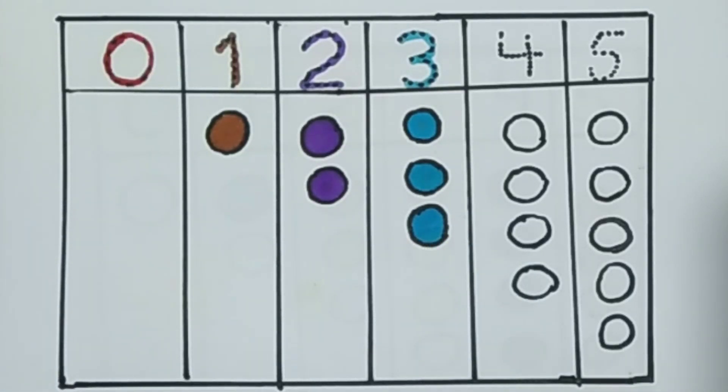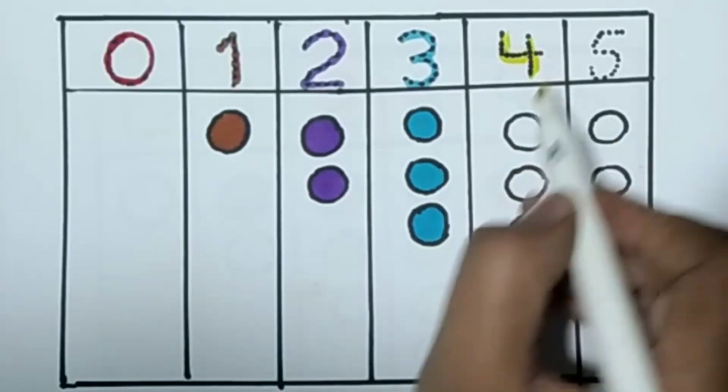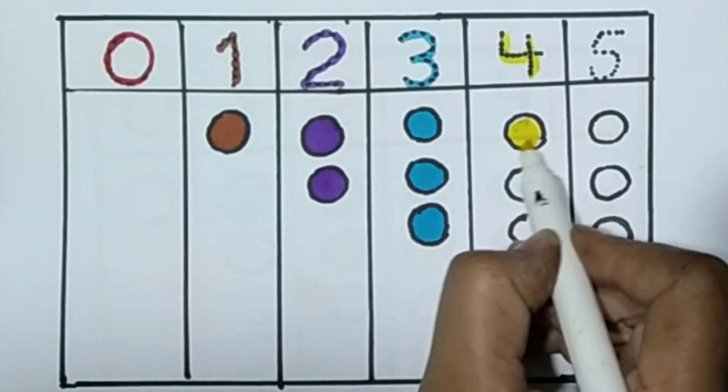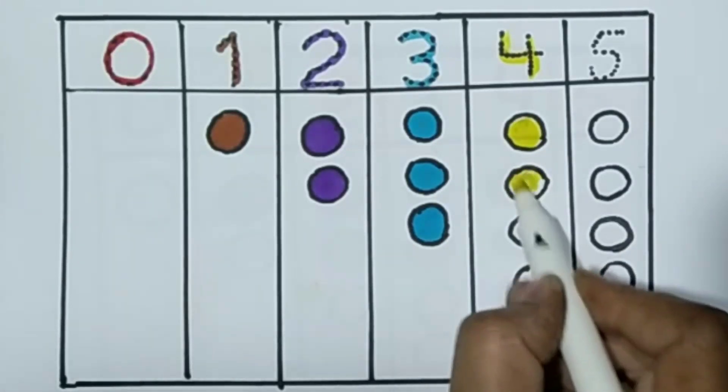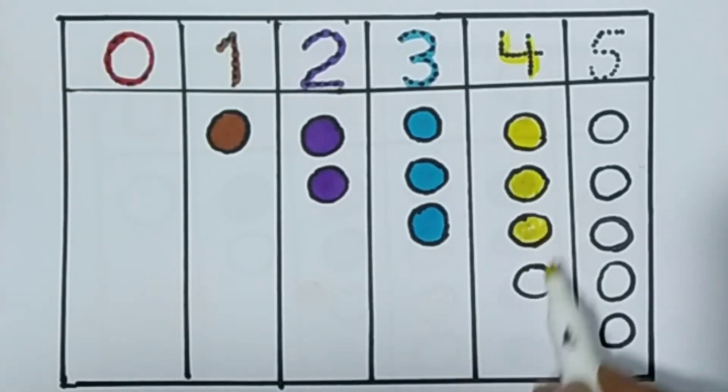And now we draw number 4. Yellow color. We draw number 4. Number 4 means 1 circle, 2 circles. Yellow circles. 3 circles. And 4 circles.